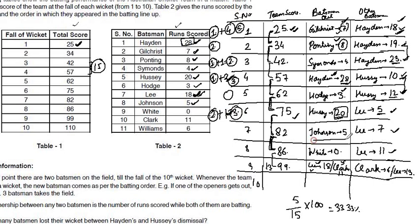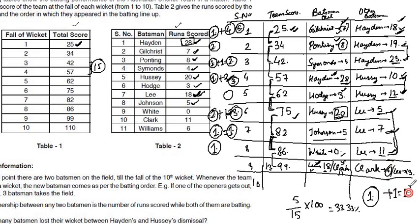For Johnson's wicket: Johnson scored 5 (max 1 four), Lee scored 2 (no fours) — total 1 four. White scored 0 (0 fours), Lee scored 4 (max 1 four) — total 1 four. For the 9th wicket, in either case — whether Lee got out or Clark got out — the maximum number of 4s is 2. In either scenario for Lee and Clark, the number of 4s can be 2.